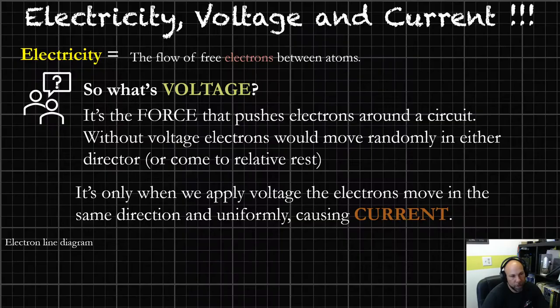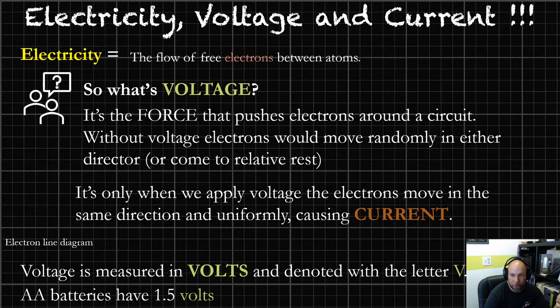Back to our slide: voltage is measured in a unit called volts, and it's denoted with the letter V. To give you some perspective, the AAA batteries we're all familiar with are 1.5 volts. Those little square batteries we typically use in larger devices are 9 volts — so there's more pressure behind the electrons to get them to go where we want them to go.